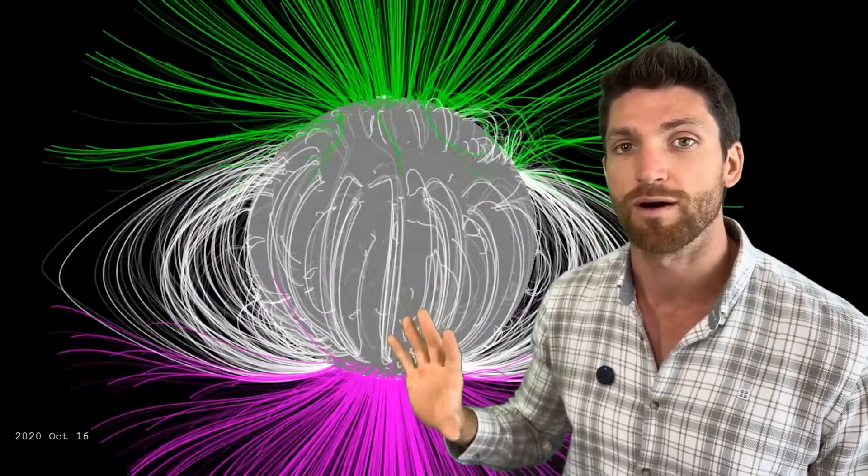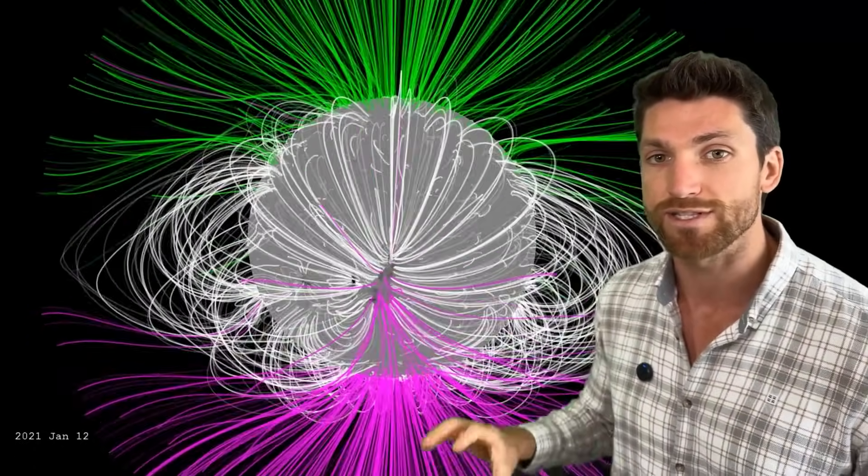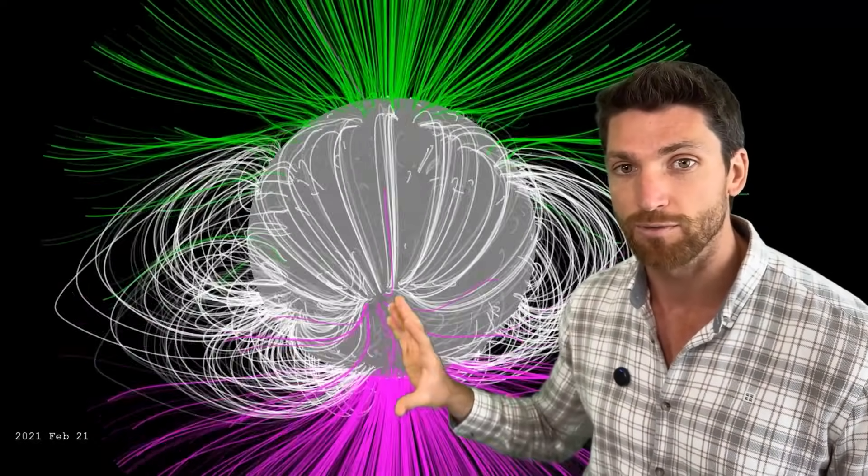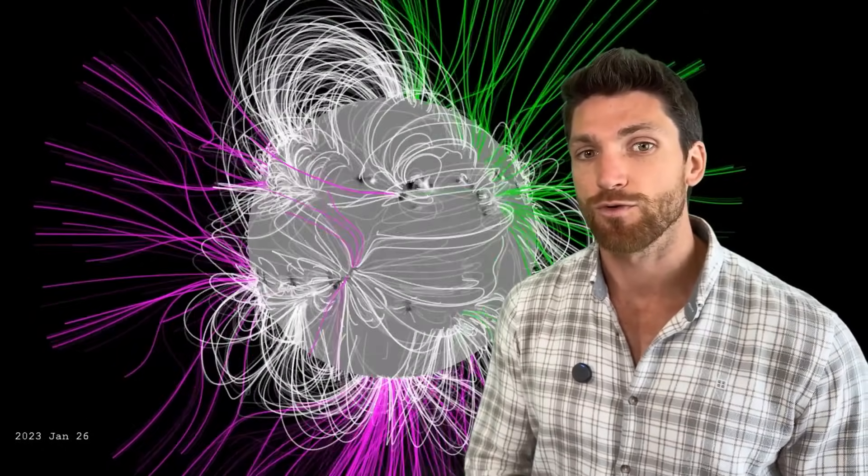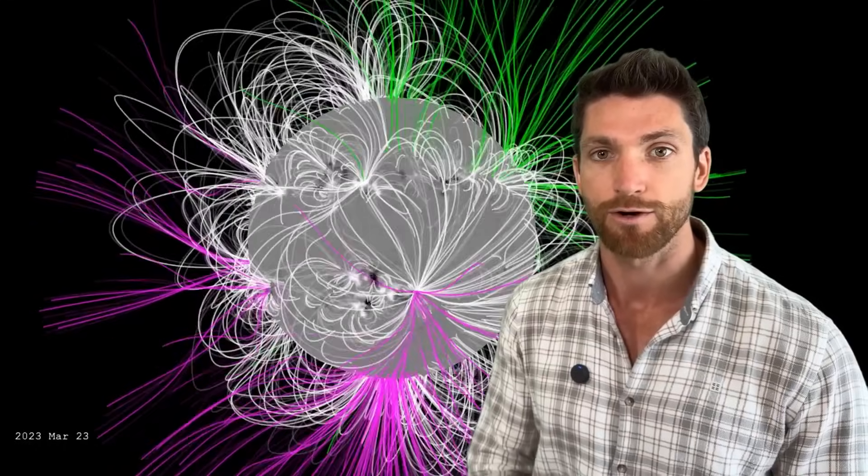This is the solar minimum dipole going back to the beginning of solar cycle 25, about December of 2019. Here we see, actually we're right at the end of 2020 getting into 2021, we see this polarity, this clear dipole starting to flip with a little bit more chaotic magnetic field dynamics emerging from the sun.